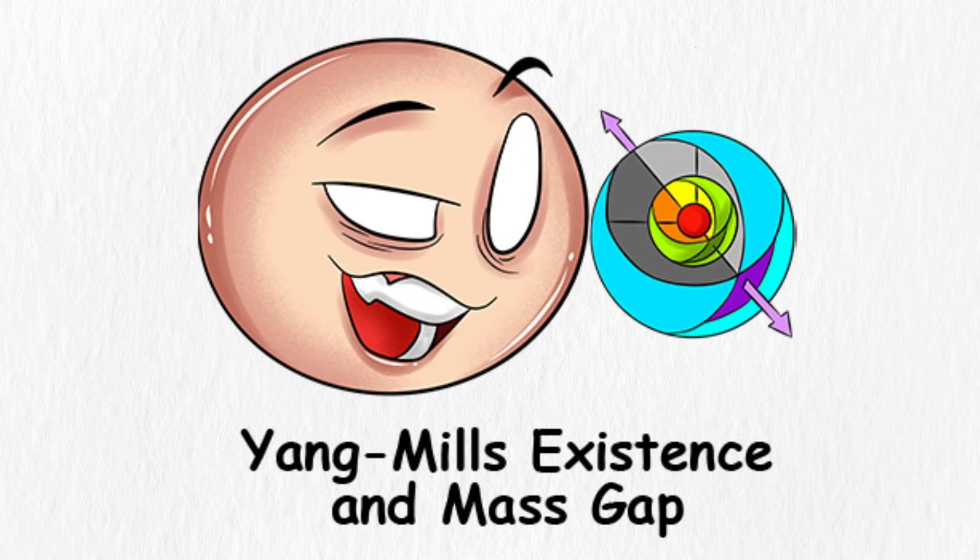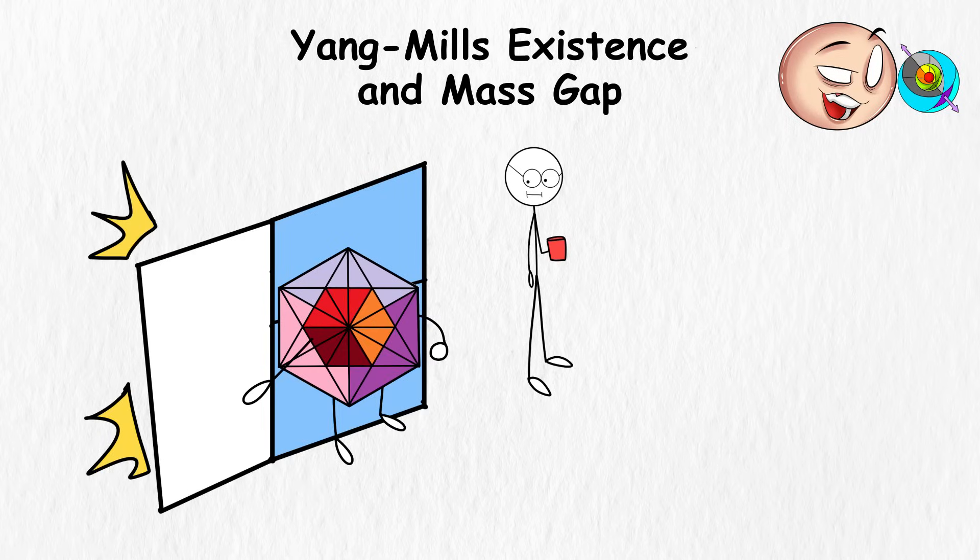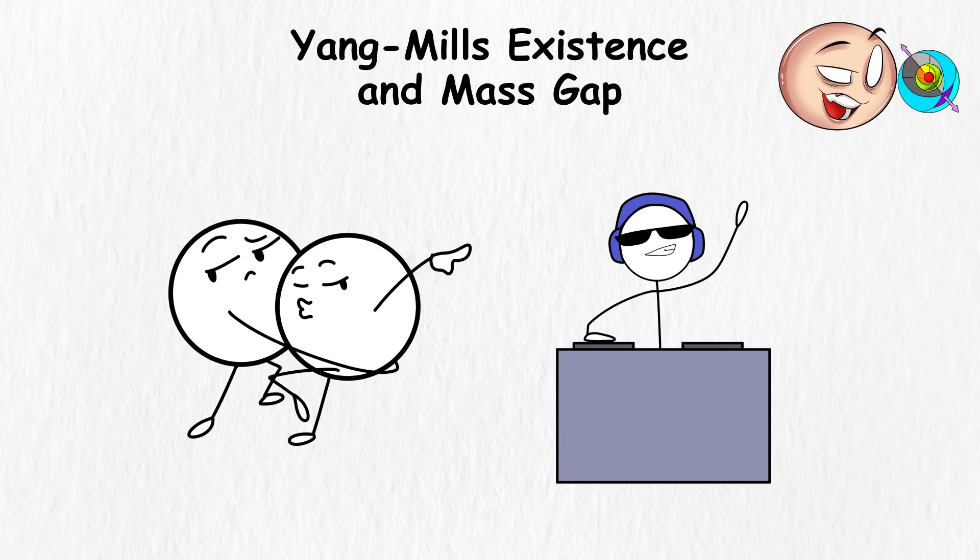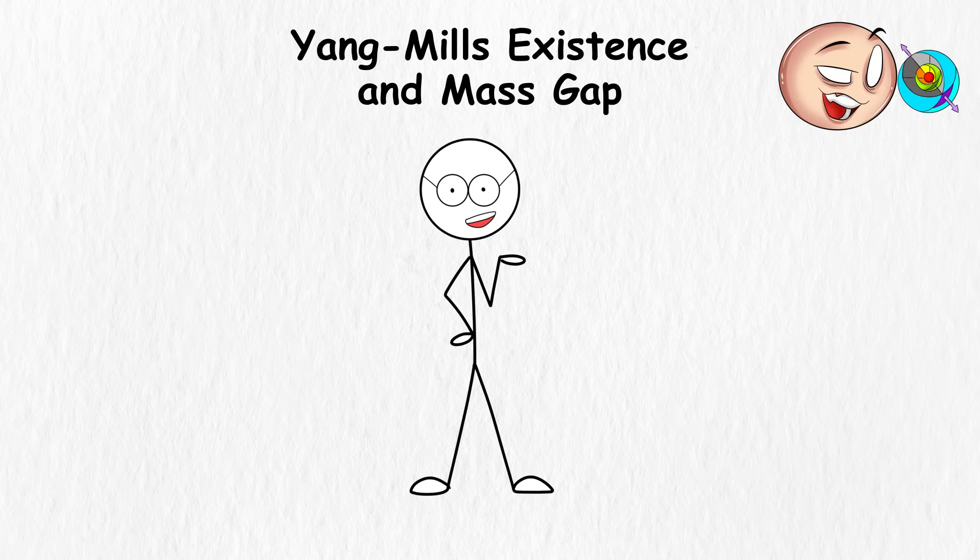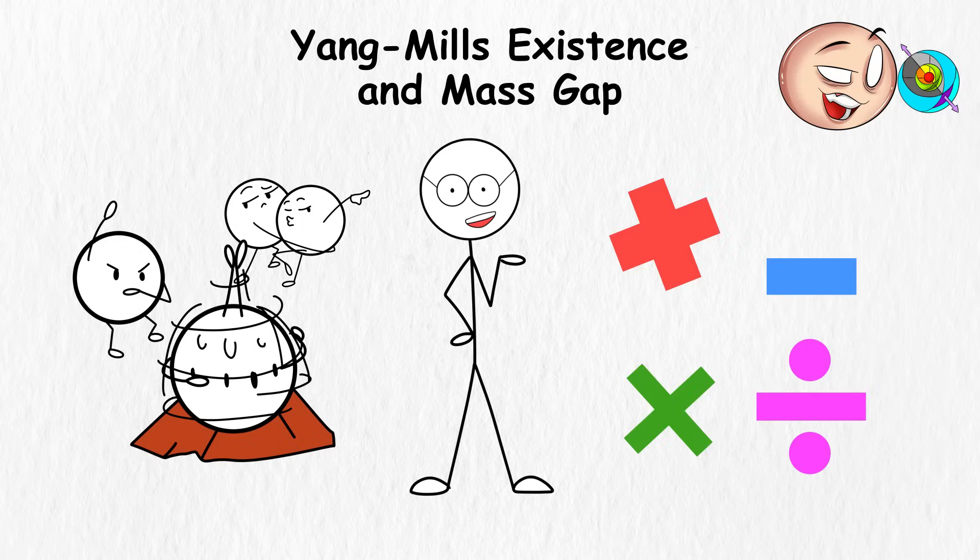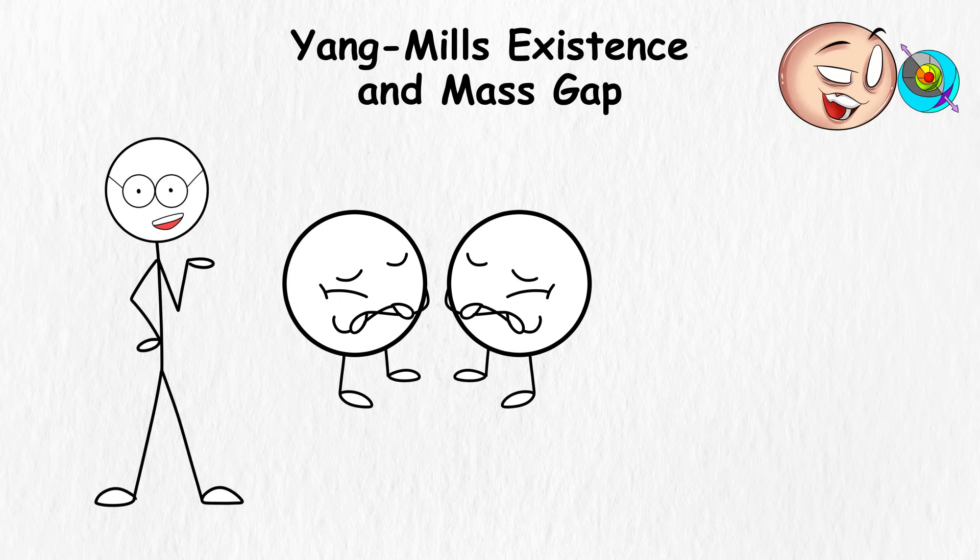Yang-Mills Existence and Mass Gap. You're at a party of particles, and everyone's dancing. These particles are having the time of their life until the Yang-Mills theory comes in. The DJ tries to mix beats for particles that refuse to dance to any rhythm. They have their preferences. Some particles prefer to dance the cha-cha, while others prefer the hip-hop style. The existence part of the problem is like trying to get all these particles to agree on a dance partner. You introduce different dance partners in the form of mathematical fields, but all of them are too picky. They will only pair up under specific conditions, and finding those conditions is the challenging part of this problem.